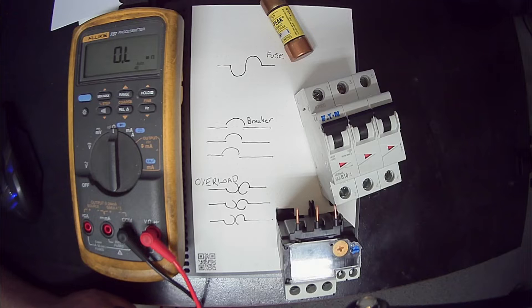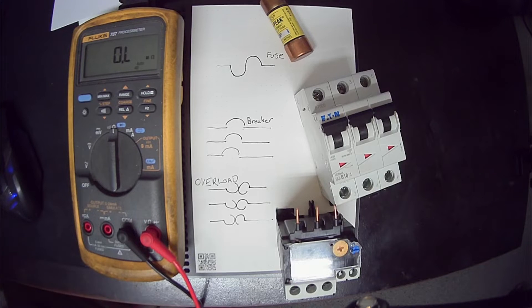So in some cases, like on the input of a drive, some drives can only really have a fast blow type of fuse and that's to prevent damage to the drive. Most overloads are kind of in their name - whether it's a fuse, a breaker, or motor overload, they all kind of work the same ways. They're trying to protect the equipment and the wiring.